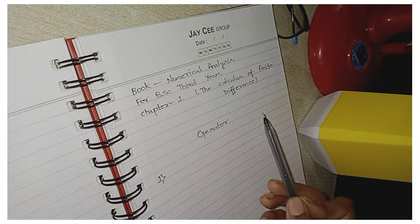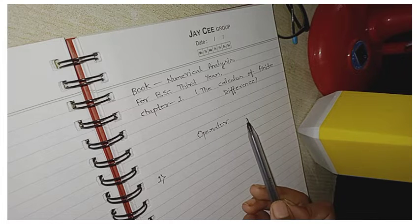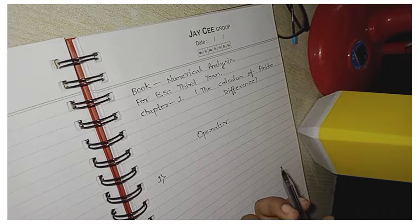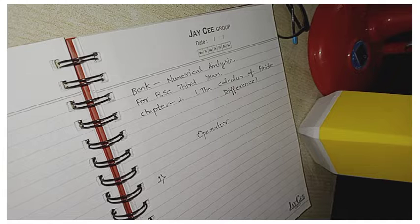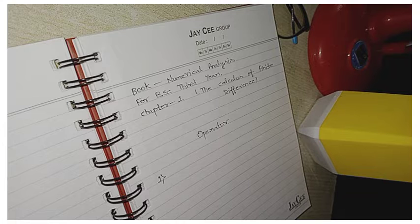The book is Numerical Analysis and chapter 1 is the Calculus of Finite Differences. First thing is the most basic thing of this chapter is Operator. If you are aware of this word what is the operator and what are the kinds of operator, then you can easily solve any question.